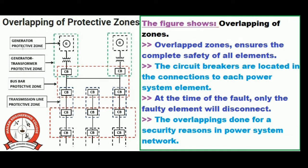The protective zone covers the entire power system and no part of the equipment is left unprotected. It usually consists of one or more elements of the power system. The protection zone mainly depends upon the rating of the machine, its location, the probability of faults, and the abnormal condition of the equipment. A fault occurring in an unprotected system will damage the equipment and disturb the continuity of the supply.